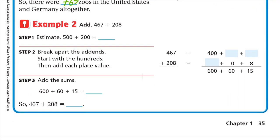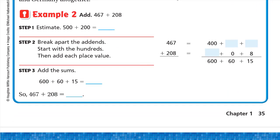Now let's have another example: 467 plus 208. Let's first estimate. For 467, look at the digit to the right of the hundreds place — it's 6. Six is a strong digit, so the 4 becomes 500.